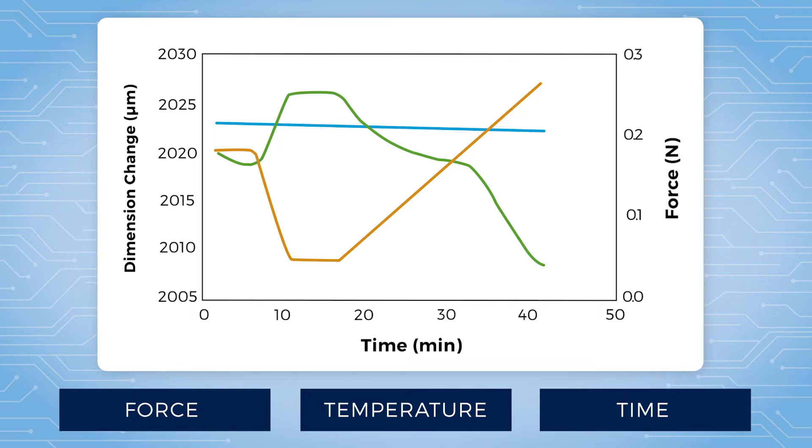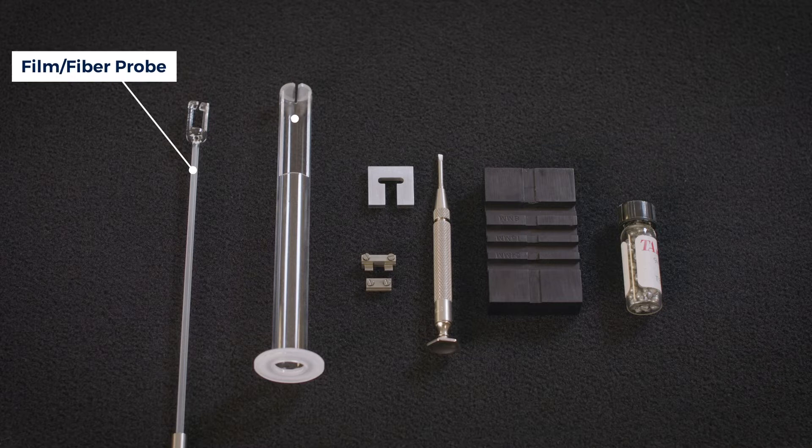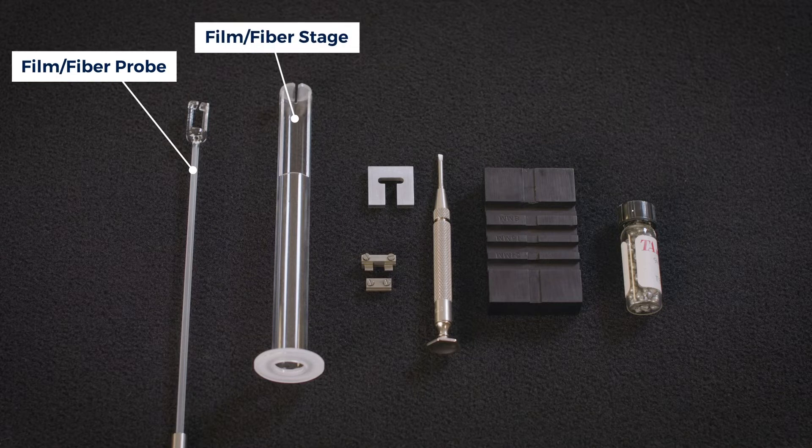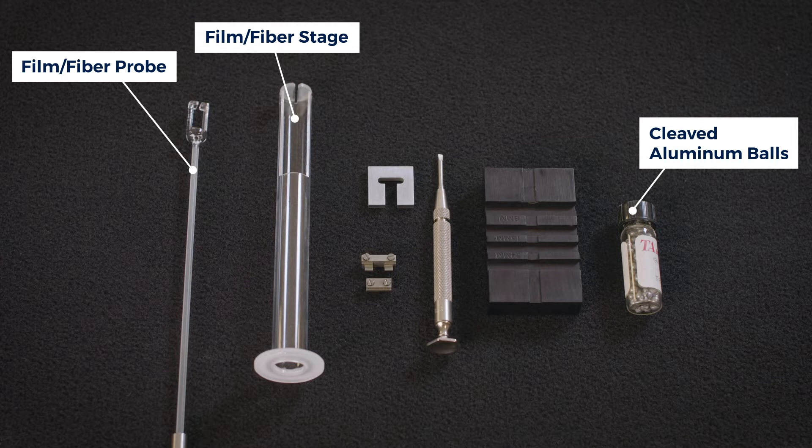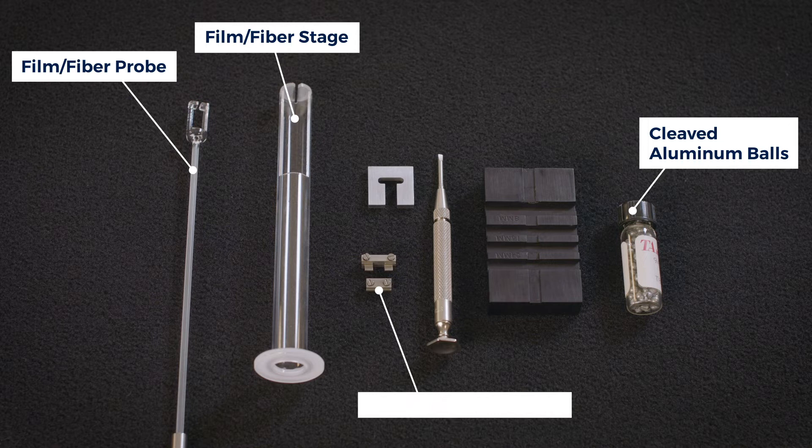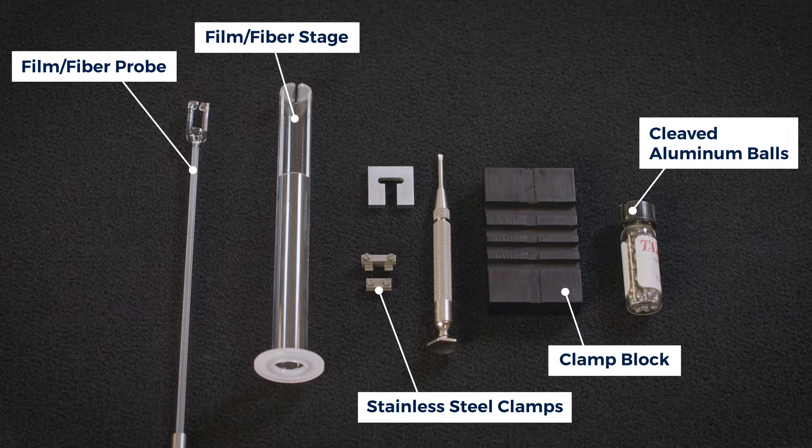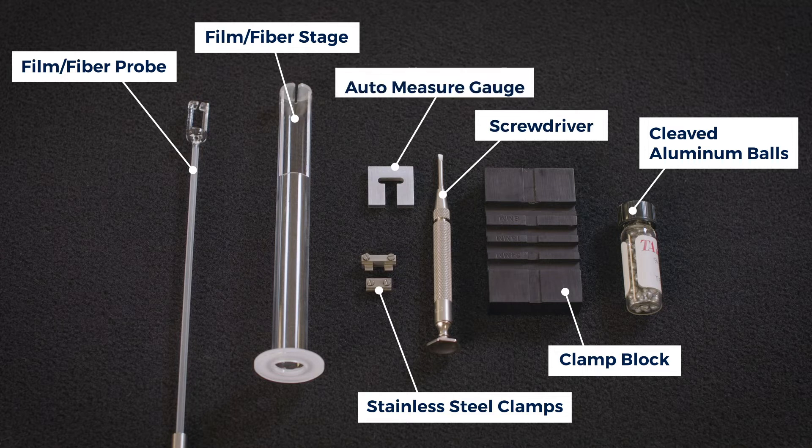The film fiber accessory kit contains a film fiber probe, a film fiber stage, a vial of cleaved aluminum balls that can be used when testing fibers and calibrating temperature, stainless steel clamps to use when testing either films or fibers, a clamp block to mount the samples in the stainless steel clamps, a screwdriver and an auto-measure gauge.